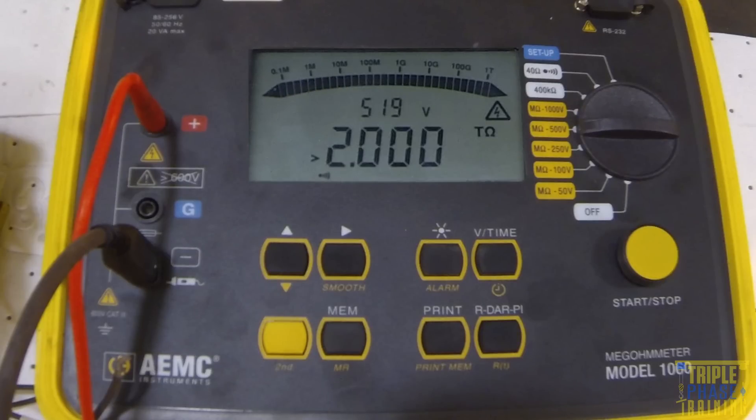The brand new H-Class motor quickly displays a reading greater than 2 tera ohms. That is the highest resistance the 1060 can measure. With a reading of greater than 2 trillion ohms, you can be confident that the motor is good.